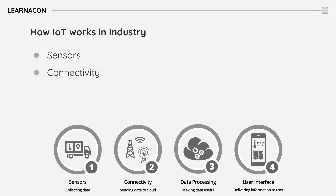This data is then transmitted to a central system such as a cloud, usually via internet or other communication networks. Connectivity can be achieved through various means such as Wi-Fi, Bluetooth, cellular networks, or specialized IoT protocols like ZigBee or LoRaWAN.